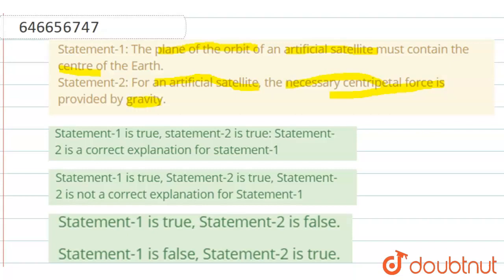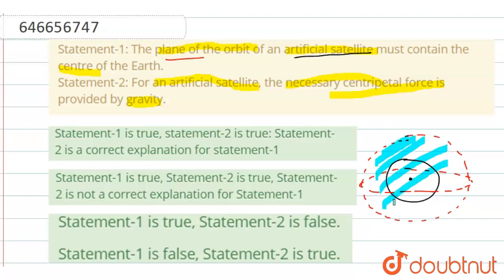If we consider statement number 1, it should be drawn by the figure. Suppose this is earth and this is center of the earth and there is an artificial satellite. Let me show artificial satellite's orbit with the red color. If this is the artificial satellite in any plane, let me talk for different planes. Let this is the equatorial plane. In any condition, the plane of the orbit, in this case, this is the plane of the orbit.